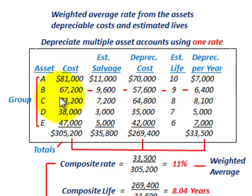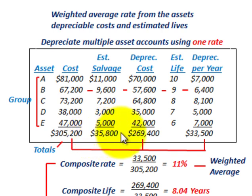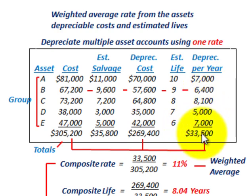To get the group totals, take the total amounts for asset cost, estimated salvage value, depreciable cost, and depreciation per year across all assets in the group.